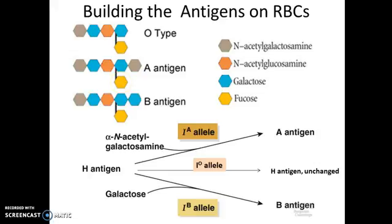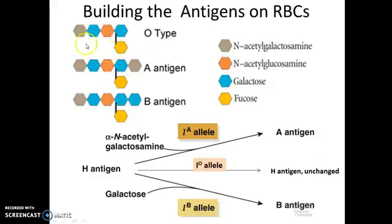There is an enzyme called a galactosyltransferase, and there is a gene that encodes it. One particular allele of the gene results in a working galactosyltransferase that places N-acetylgalactosamine onto the H antigen, building the A antigen from H. The B allele places galactose on instead, building the B antigen. There is also a version of the galactosyltransferase that is totally non-functional — the O allele — and when expressed, you get a faulty protein incapable of adding any sugar onto the H antigen, so the H antigen remains unchanged.